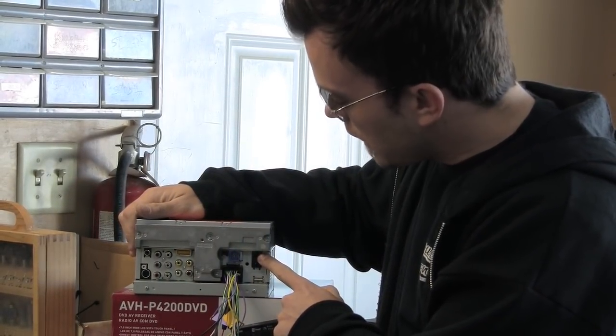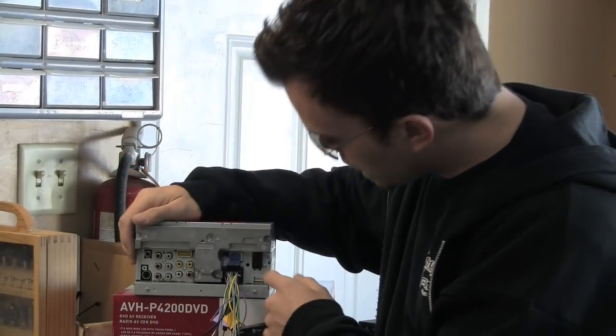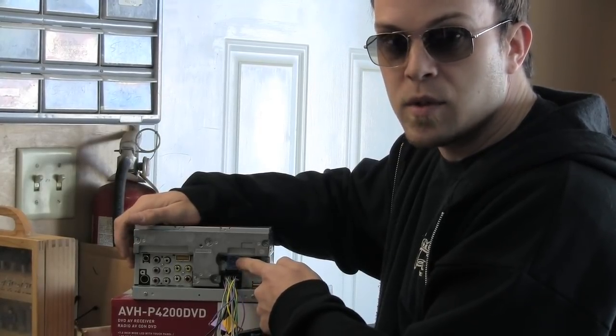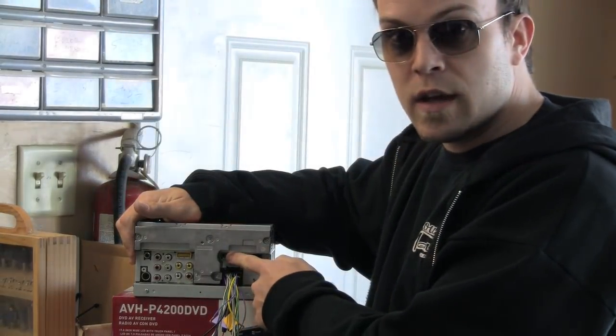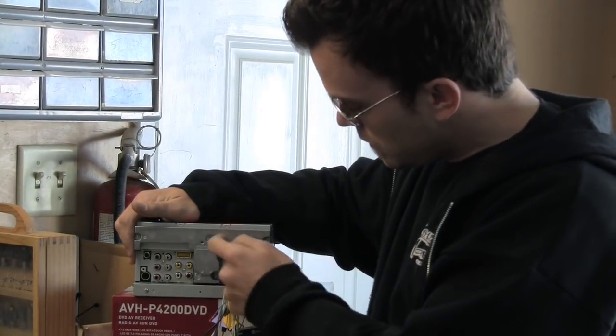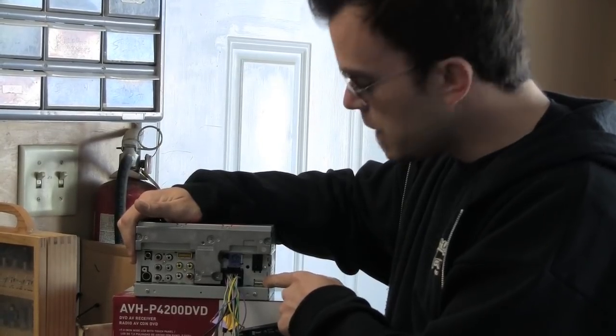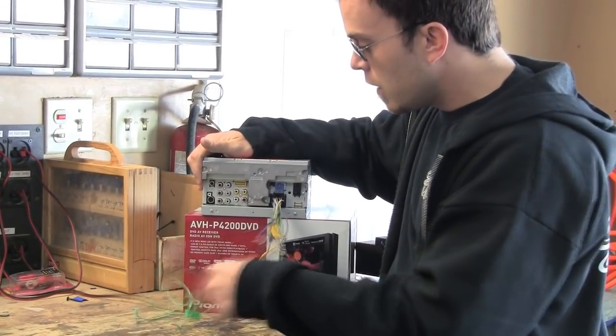This is a wired remote input that'll let you integrate your factory steering wheel controls into this unit to work it. This is the IP bus in for adding XM or Sirius satellite radio. This over here is an auxiliary in. So you have a 3.5 in. And here's a USB input for the iPod cable. And here's your power harness. And this green wire is the parking brake wire.